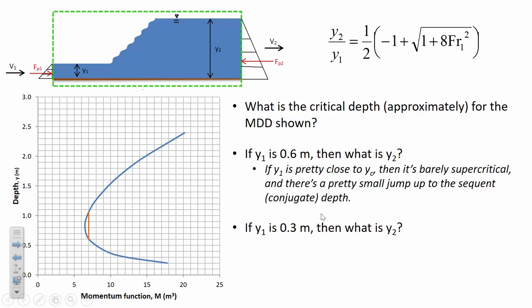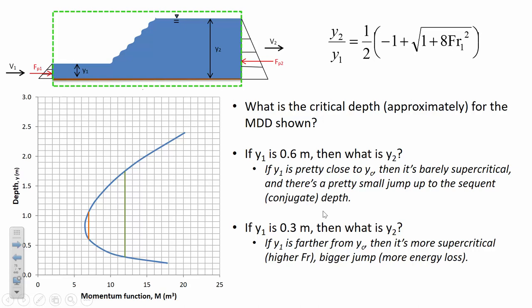What if Y1 was 0.3? Now we're quite a bit further away from the critical depth, so flow conditions are more supercritical and the Froude number would be much higher. To find Y2, we'd connect the lower momentum amount. With a depth of 0.3, we're talking about 12 cubic meters of momentum, and the conjugate downstream depth looks like about 1.75. That went from 0.3 to 1.75 — a big jump — losing quite a lot of energy, which may be the objective: to dissipate energy so there isn't hydraulic scour downstream.